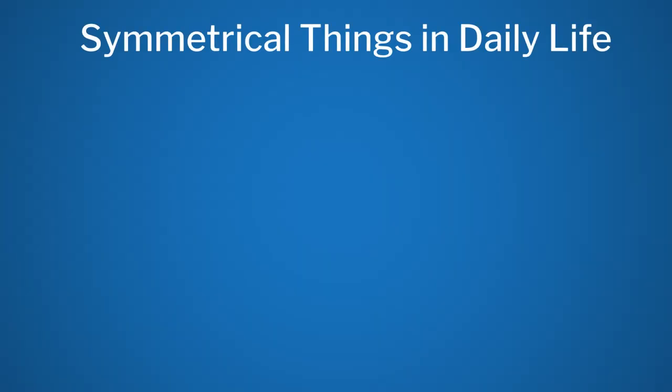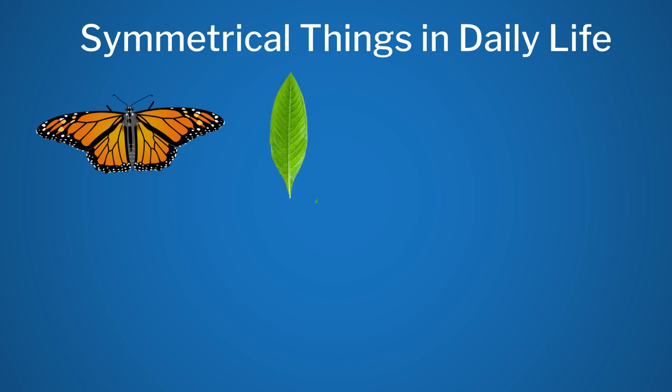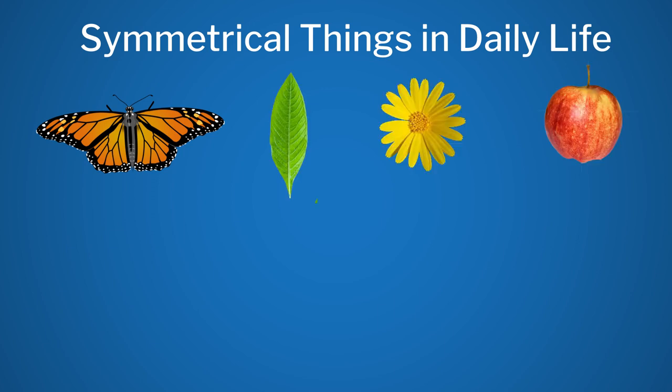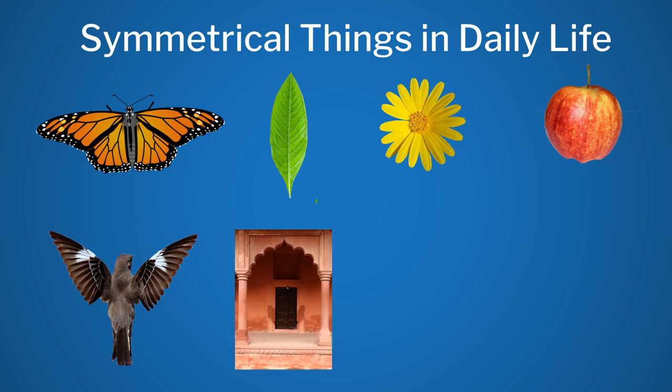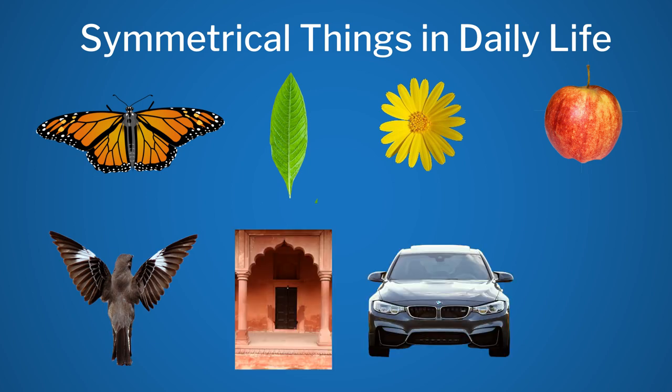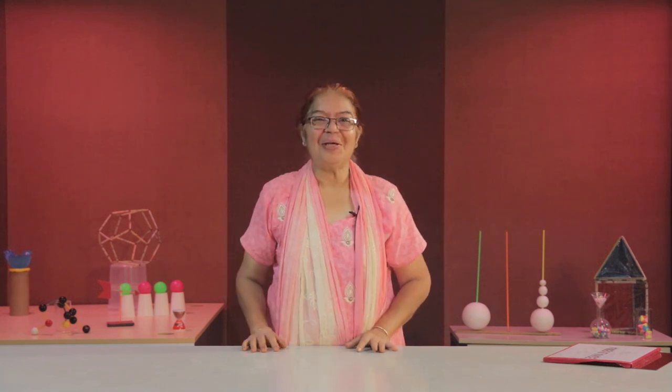We get to see such symmetrical figures in nature — in leaves, in flowers, in fruits, in flying birds, in historical buildings, in some vehicles, and in many of our day-to-day useful things. Hope this video helps you identify symmetrical and asymmetrical objects in your surroundings. Hope you enjoyed this video. Thank you.